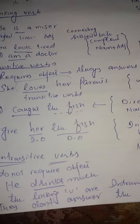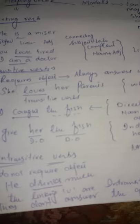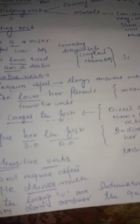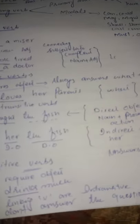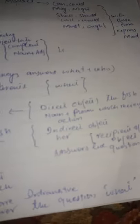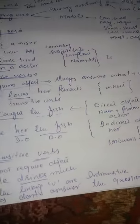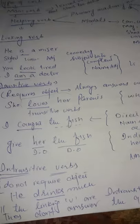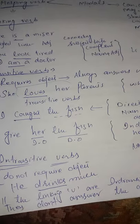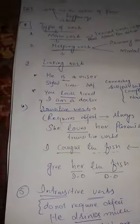Now, when I say 'gives her the fish,' 'her' is the indirect object, which is the optional part of the object but is the recipient of the direct object. The direct object answers the question 'what?' while the indirect object answers the question 'to whom?' or 'for whom?'